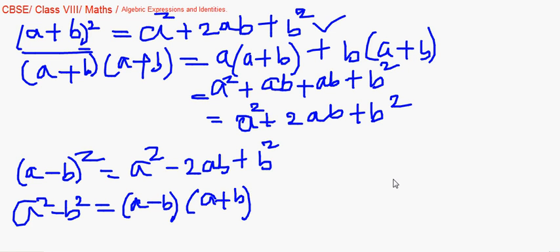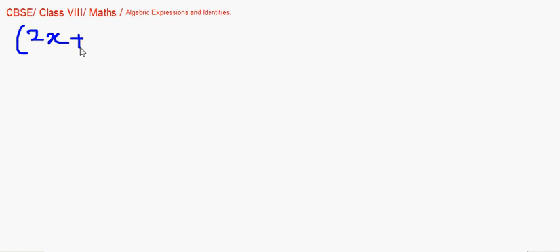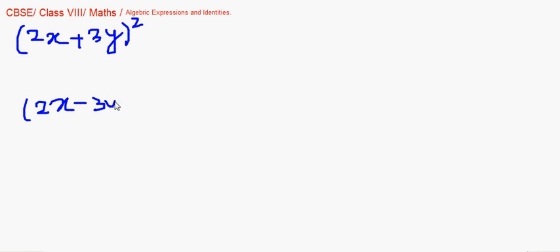These are the first three identities — we will refer to them as Identity 1, Identity 2, and Identity 3 accordingly. Let's move on to take direct application questions. You'll come across questions asking you to directly find (a + b) whole square or (a − b) whole square. You identify the values of a and b accordingly.